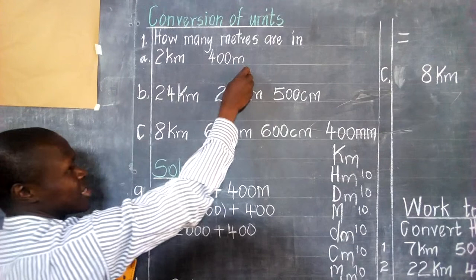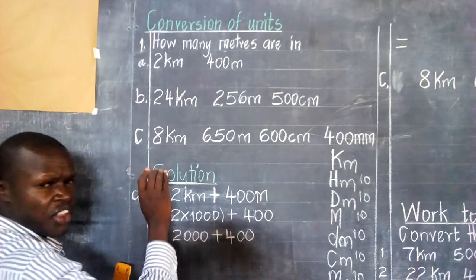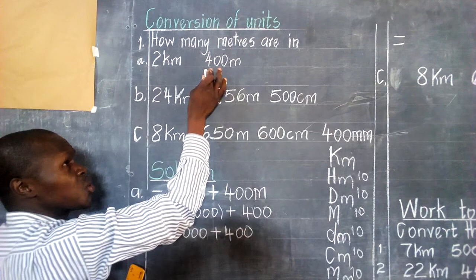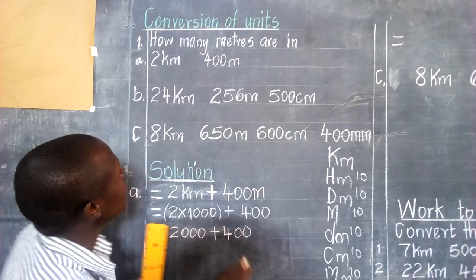We want to convert two kilometres and four hundred metres. We want to change everything to be in metres. We change two kilometres into metres, but when we come to four hundred metres, we can't change metres into metres.